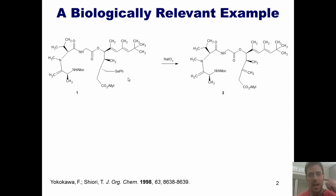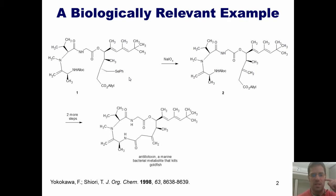Elimination reactions are reactions in which a leaving group is pushed off and in its place is formed a double bond. Incidentally, they took molecule 2 over a couple of steps and made this thing called entilatoxin, which is a marine bacterial metabolite that kills goldfish. I'm honestly not sure why they wanted to do that. I assume it was because they wanted to study why goldfish have been dying, or maybe they just wanted to come up with an expensive way of killing goldfish.